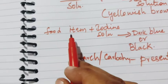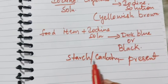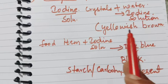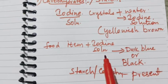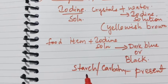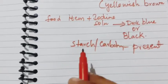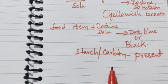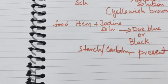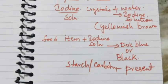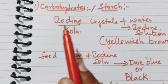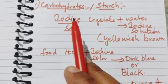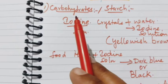If the taken food item does not contain starch or carbohydrate, then there will be no change in its color. The iodine solution remains yellowish brown, indicating the absence of starch or carbohydrate. If there is no color change, we can confirm that the food item does not contain starch or carbohydrate. In this manner, using iodine solution, we can confirm whether the given food item contains starch or carbohydrates.